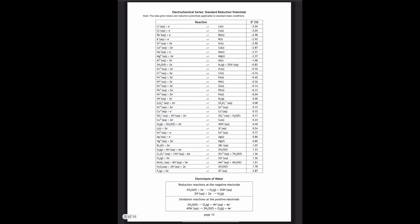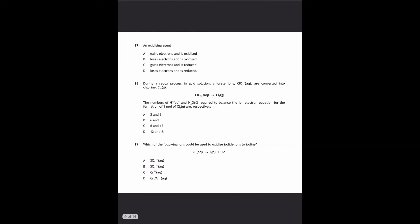Next question: which of the following is the strongest reducing agent? The best reducing agent is at the top right-hand side — out of the options, lithium is highest up, so that's the answer. Then question 17 asks about the nature of an oxidizing agent — whether it gains or loses electrons and whether it's oxidized or reduced. An oxidizing agent gets reduced, so that rules out A and B. If it's being reduced it must be gaining electrons because of OIL RIG — reduction is gain. So C is the answer.